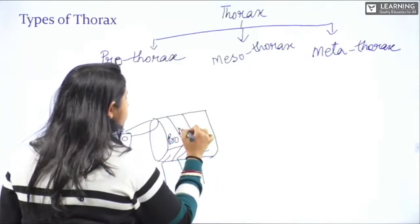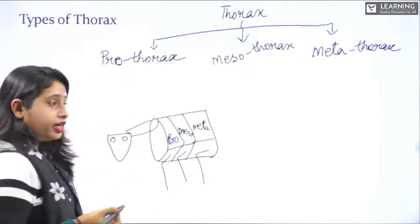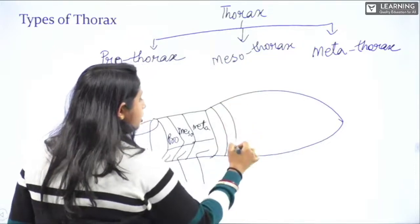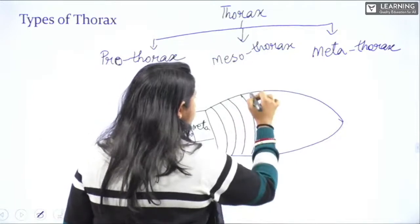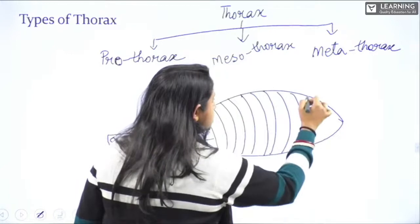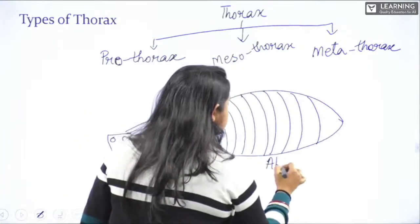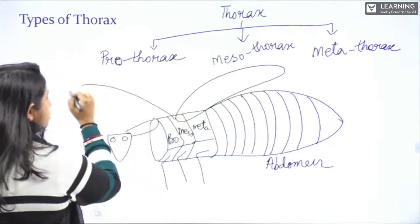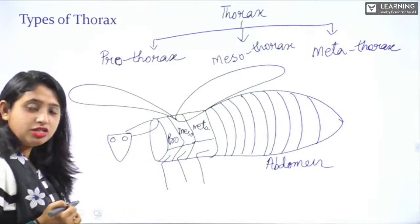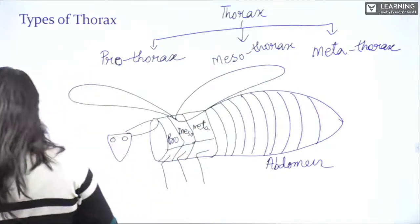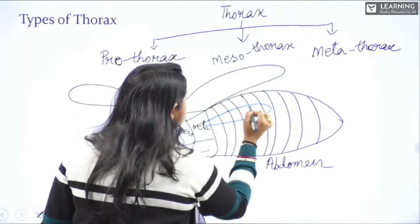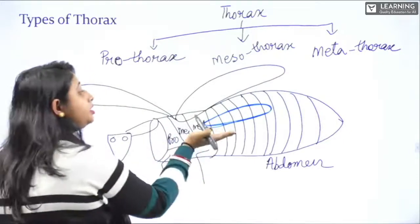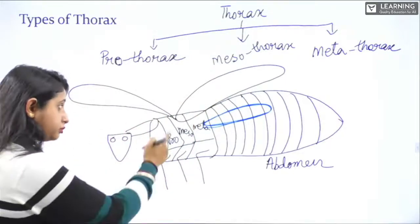The prothorax is first, then mesothorax, then metathorax. After the thorax comes the abdomen with ten segments. In the mesothorax, they have long feathery wings. In the metathorax, they have small hind wings responsible for flying. They have two pairs of wings in total.